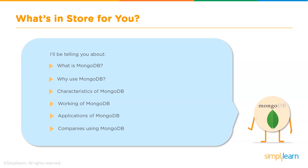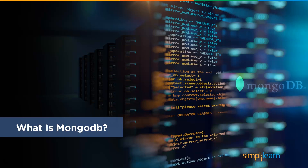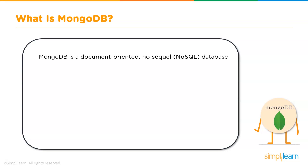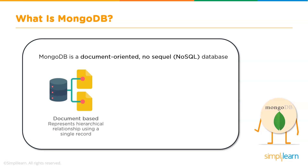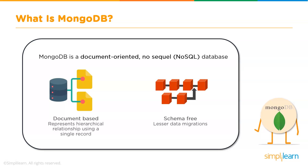Finally we'll look at the top companies that deploy MongoDB. So what exactly is MongoDB? It is a document-oriented NoSQL database, initially released on August 27th, 2009. MongoDB replaces the concept of rows of conventional relational data models with documents. It offers developers the flexibility to work with evolving data models. Being document-based, MongoDB allows embedded documents, arrays, and represents complex hierarchical relationships using a single record. It is also schema-free, which means the keys defined in a document are not fixed, and as a result massive data migrations can be ruled out.